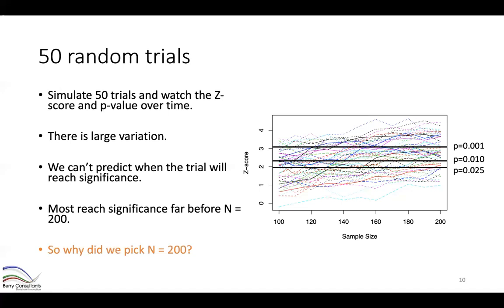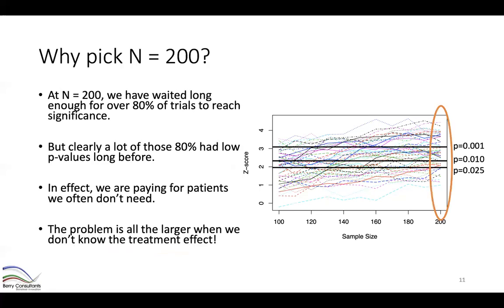So why did we pick 200? The sample size of 200 is selected so that by the end of the trial, 80% of our trials have reached significance at 0.025. Essentially we're waiting long enough for that to happen. But when we choose 200 subjects, we're buying a very expensive insurance policy — paying for subjects we often don't need if we happen to reach significance earlier.